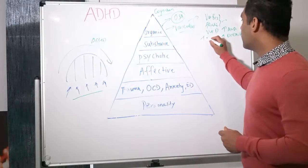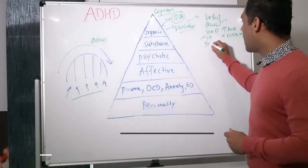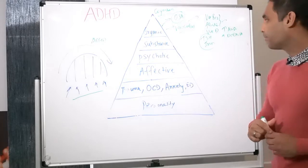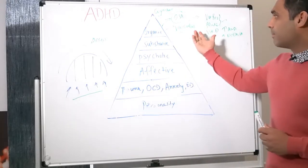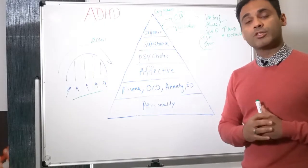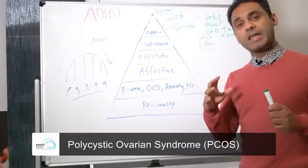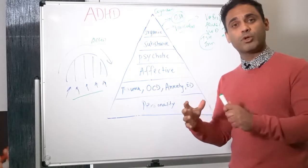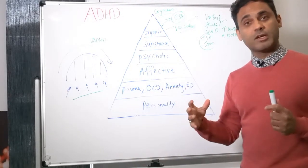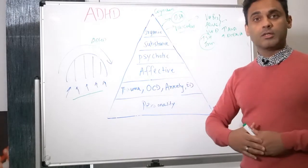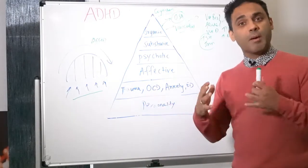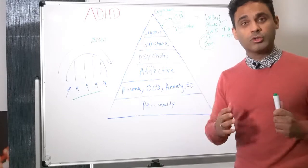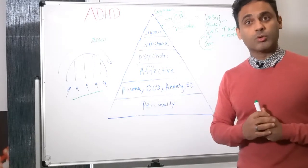Other aspects to think about include thyroid function and iron, as deficiencies in these can present with significant cognitive issues. In females — such as this 42-year-old patient — I would also be thinking about polycystic ovarian syndrome, because estrogen is very crucial for cognition. Sometimes in the perimenopausal or postmenopausal group, we can see symptoms very suggestive of ADHD onset late, but much of this can be due to estrogen deficiency impacting on cognition. So it's crucial that the hormonal aspect is also evaluated.